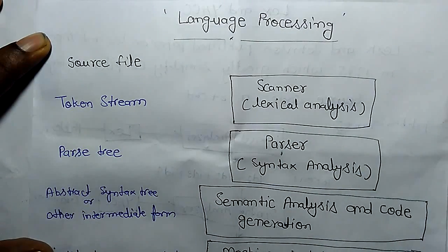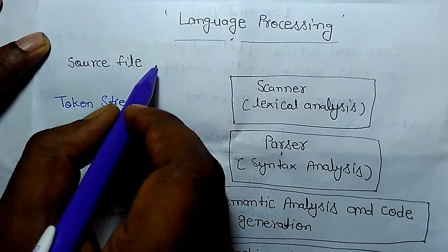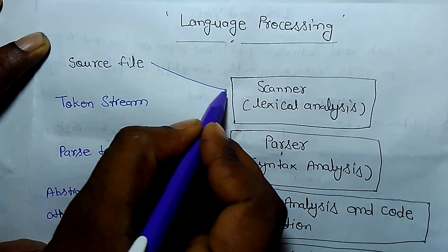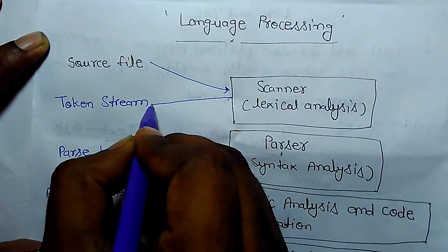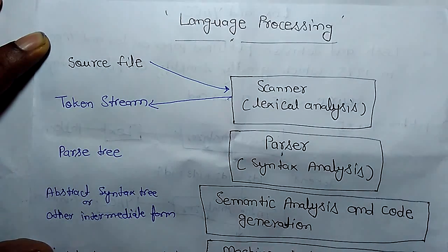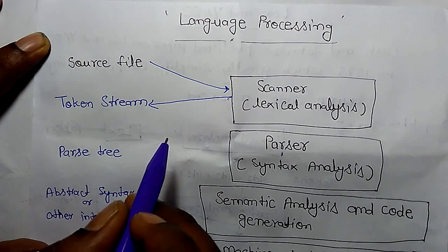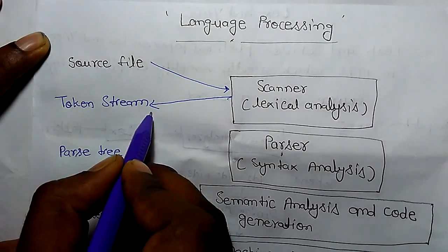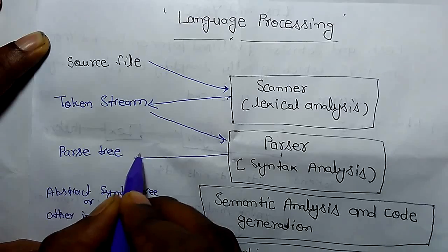There is a source file and this source file we put into scanner as input. This scanner or lexical analyzer generates a token stream and this token stream we take as input for parser and parser generates a parse tree.